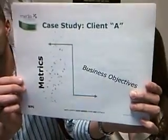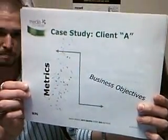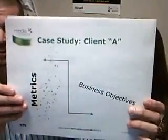Number two: align metrics with business objectives. I think this is one of the most important things. Tim, do you have a case study? Actually, I do. Once everyone is paying attention and on the same page, we have our case study here of client A. Now, as we can see by this chart, their metrics and business objectives, they're all over the place.